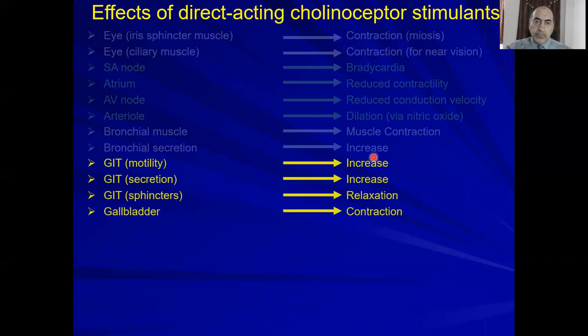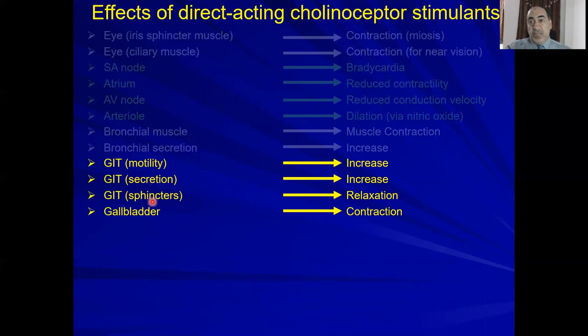On the bronchi: bronchial muscle contraction and increased secretion. On the GIT — remember 'rest and digest': during parasympathetic activation, GIT motility increases to enhance peristaltic movement, digestion, and ultimately defecation. GIT secretion increases to help digestion. Sphincters relax, enabling defecation. In the gallbladder, contraction occurs to push bile into the duodenum, emulsifying fats so lipid enzymes can digest them.